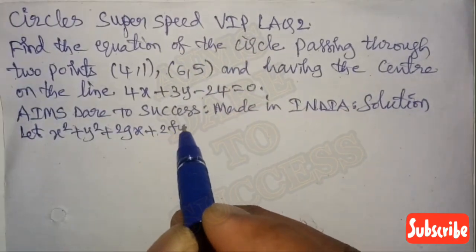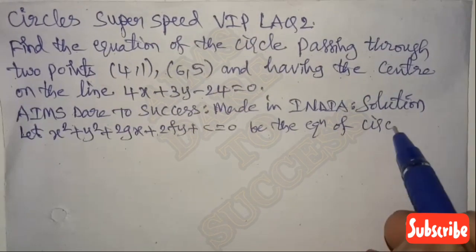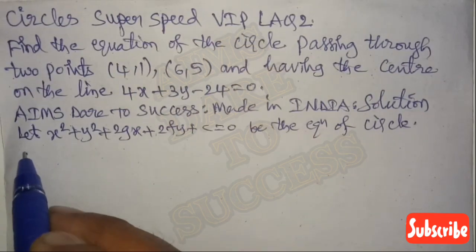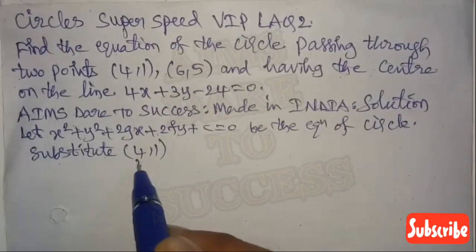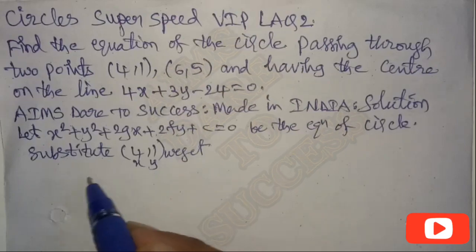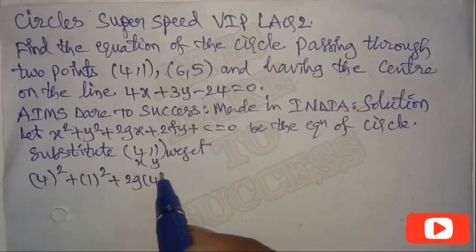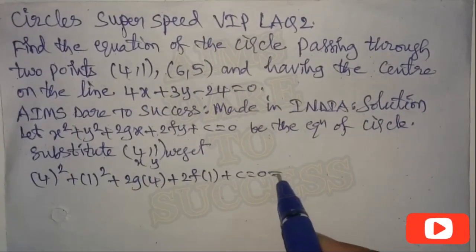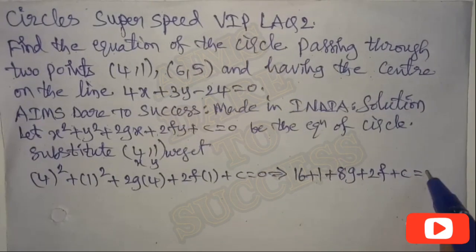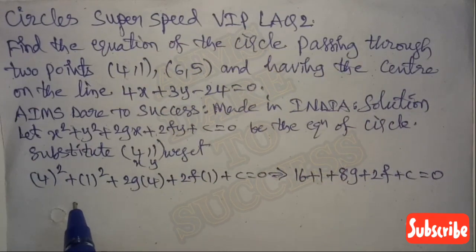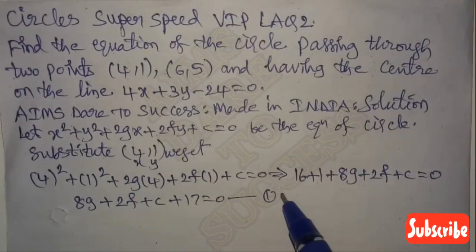Let x² + y² + 2gx + 2fy + c = 0 be the standard equation of the circle. Substituting the first point (4, 1): 4² + 1² + 2g(4) + 2f(1) + c = 0, which gives 16 + 1 + 8g + 2f + c = 0, so 8g + 2f + c + 17 = 0. Let this be Equation 1.